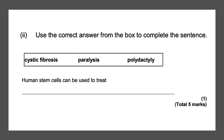Use the correct answer from the box to complete the sentence: human stem cells can be used to treat — and this is one of the advantages — they can be used to treat paralysis, and that gives you one mark.